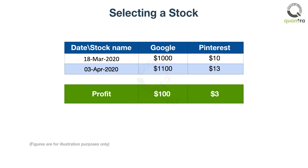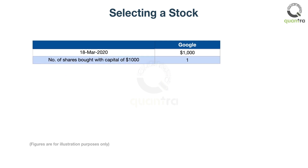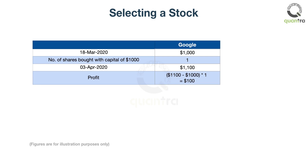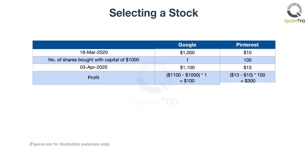To arrive at the right answer, you can allocate an equal amount of capital to each of the stocks, and then compare the profits. Let us allocate $1,000 to each of the stocks. With $1,000, you can buy one share of Google. Later, the share price of Google increased to $1,100, resulting in a total profit of $100. Similarly, with $1,000, you can buy 100 shares of Pinterest. The price increased from $10 to $13, resulting in a total profit of $300.